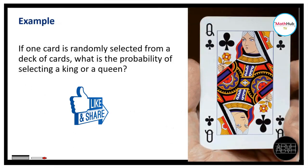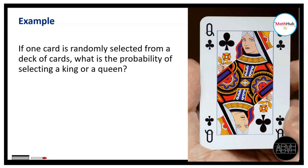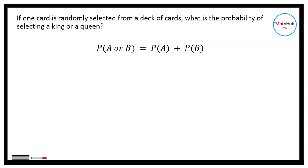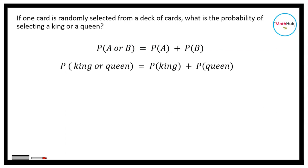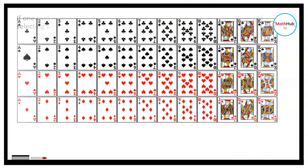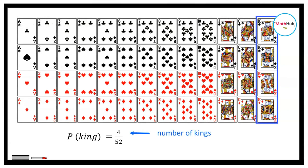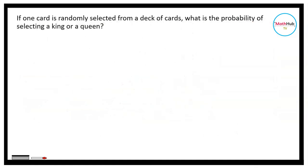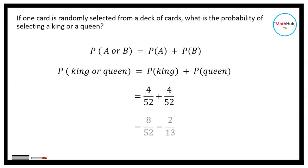To illustrate this, let's consider this example. If one card is randomly selected from a deck of cards, what is the probability of selecting a king or a queen? To get this probability, we will first find the probability of selecting a king, then the probability of selecting a queen, and add the two. The probability of selecting a king is 4 over 52 because there are four kings in 52 cards. Similarly, the probability of selecting a queen is also 4 over 52. Adding these two probabilities, we get 8 over 52, which simplifies to 2 over 13.